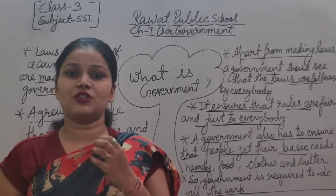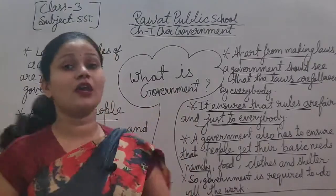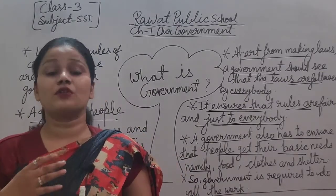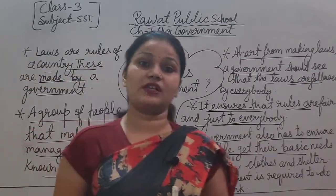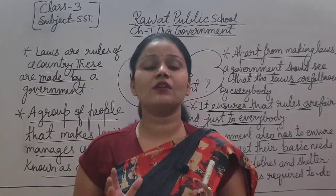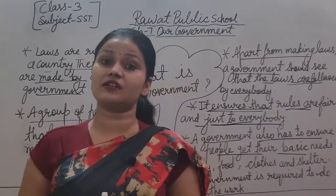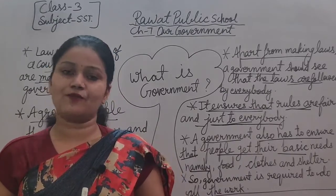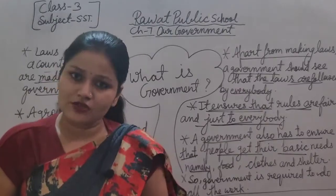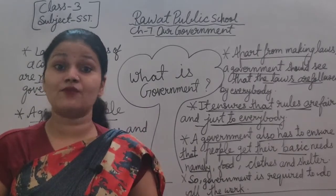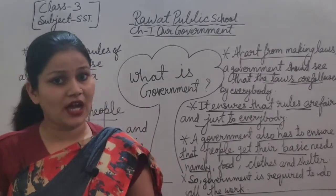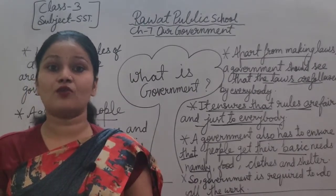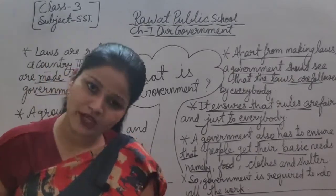तभी हमारे सभी citizens जितने भी rules हमारी government बनाती है, उन सभी को follow कर पाते हैं। Government को time to time check करना होता है कि लोगों की basic needs time पर पूरी हों, और सभी citizens happily और comfortably अपनी life जी सकें। I hope you all understand what is government. In our next class, we will discuss the branches of government. Thank you.